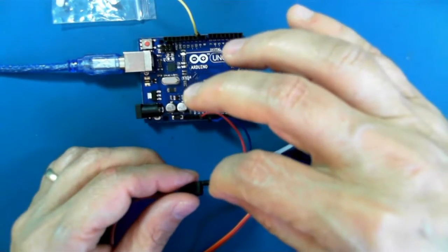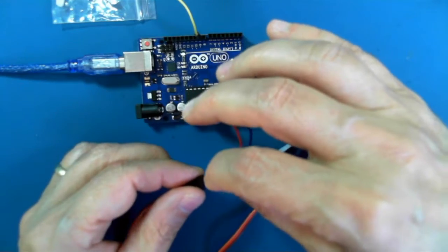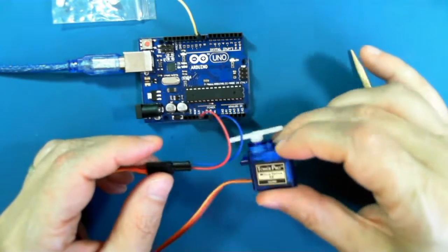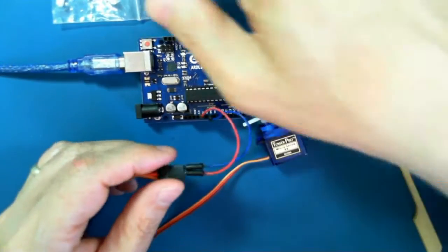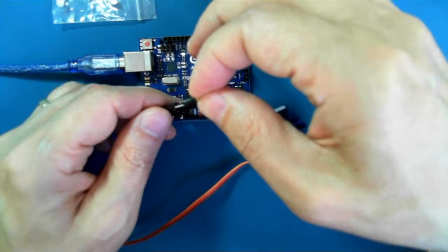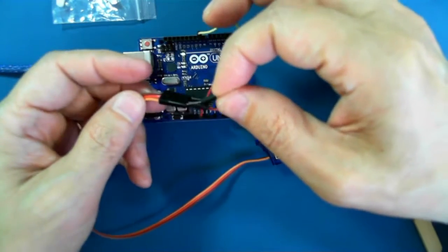The red pin to plus 5 volts. And when you connect it up to power, you may see the servo twitch a little bit. That's normal. And then pin 9 is connected to the orange.